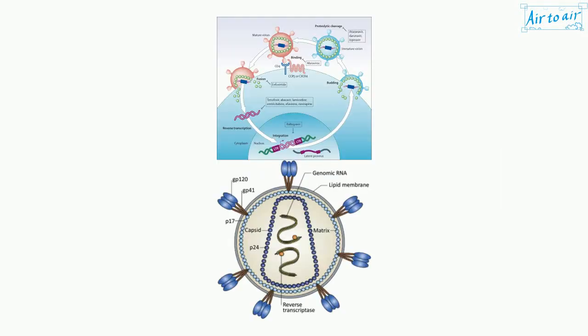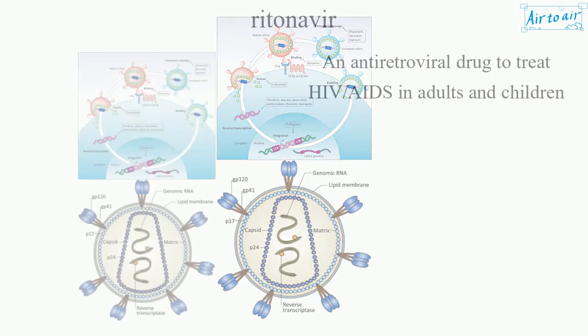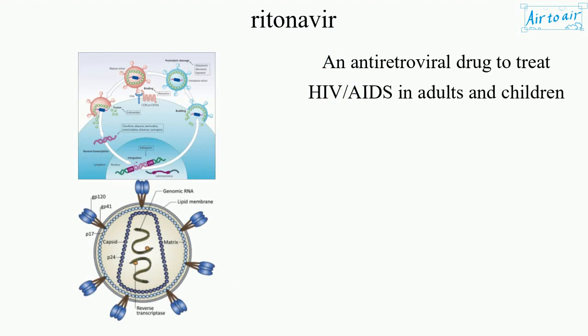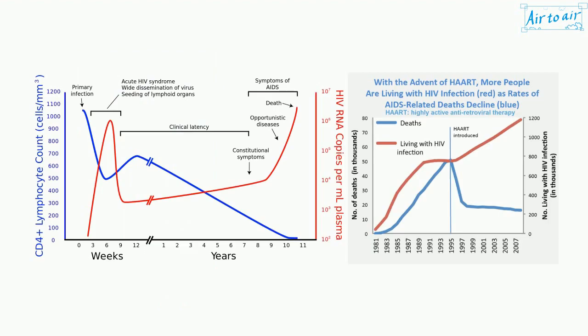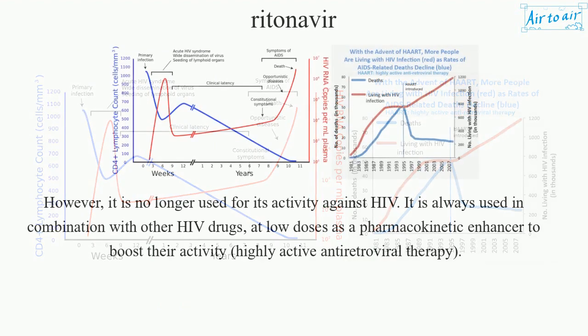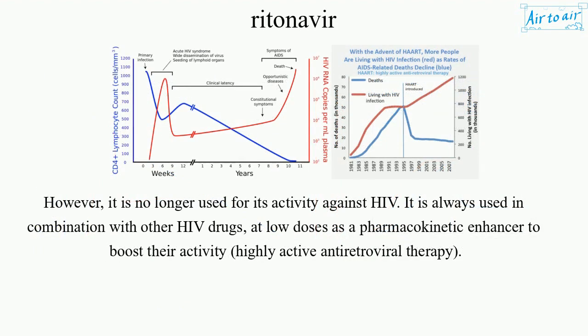Ritonavir is an antiretroviral drug used to treat HIV and AIDS in adults and children. However, it is no longer used for its direct activity against HIV.